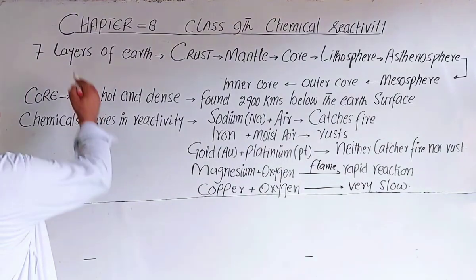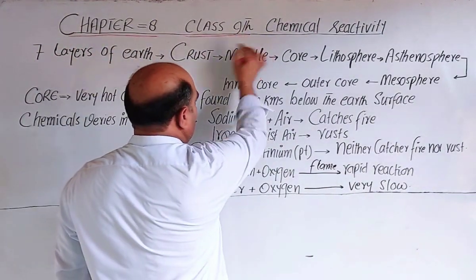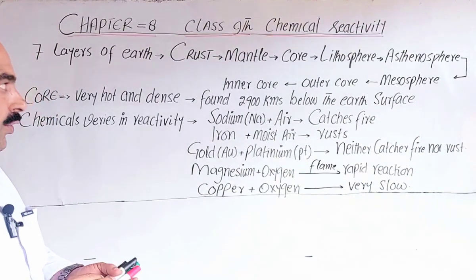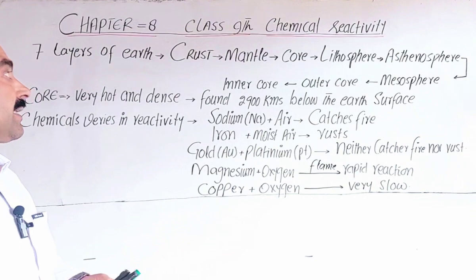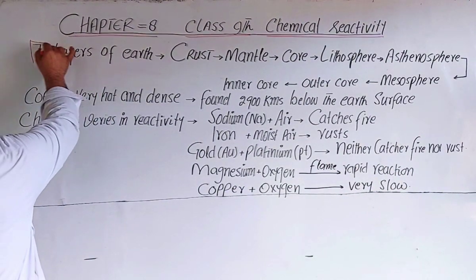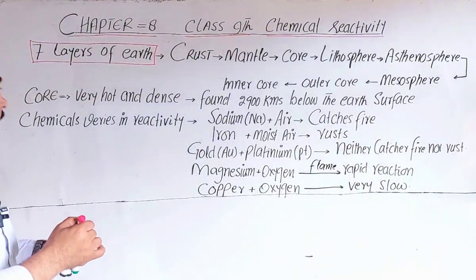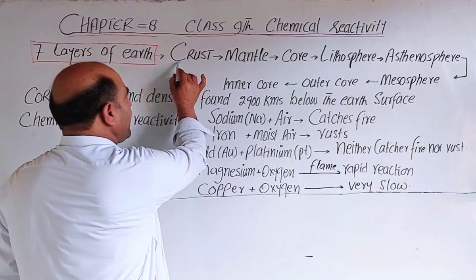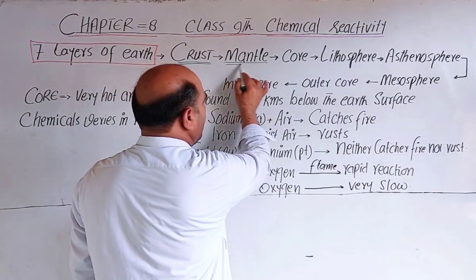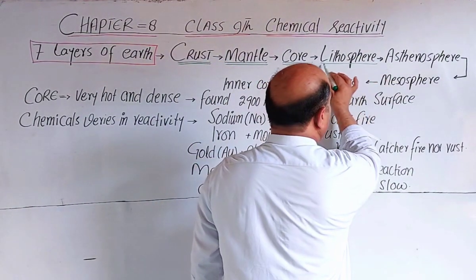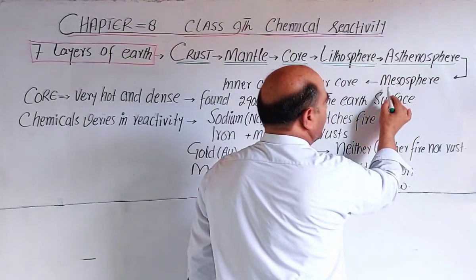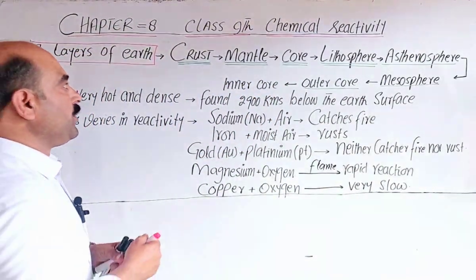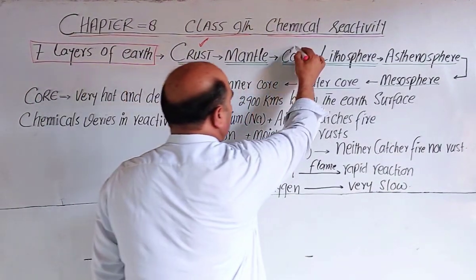Chapter number 8 for class 9th, Chemical Reactivity, starts now. The book uses various terms. The Earth is composed of seven layers. These seven layers are: crust at the top, then mantle, then core, then lithosphere, then asthenosphere, then mesosphere, then outer core, and inner core. Your textbook uses the terminologies crust and core.